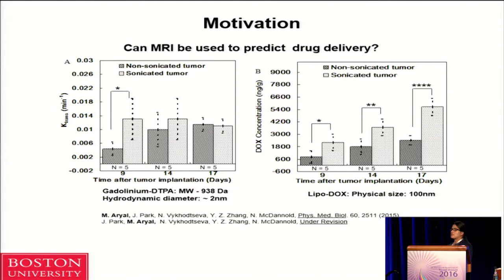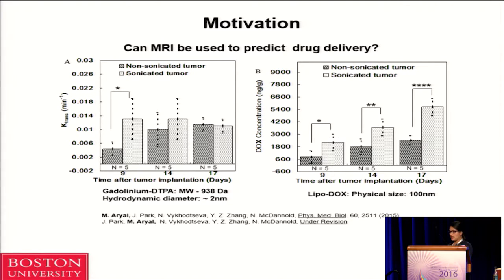We suspect there could be a size mismatch between the MRI contrast agent and the chemotherapy — gadolinium is about 2 nanometers, while lipodox is about 100 nanometers. So the central idea was: why not make a single particle that has both the imaging agent and the therapeutic agent, and deliver it through ultrasound to detect those subtle changes if there are any.